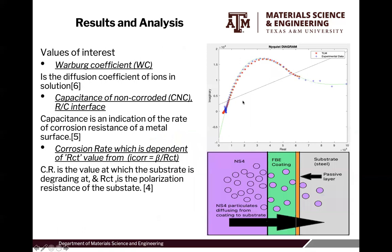For our results and analysis, the values of interest that we found were the Warburg coefficient, which is the diffusion coefficient of ions in solution; the capacitance of the non-corroded RC interface, which is an indication of the rate of corrosion resistance of a metal surface; and the corrosion rate, which is dependent on the RCT value from the I-Core equation. The corrosion rate is the value at which the substrate is degrading, and the RCT is the polarization resistance of the substrate.